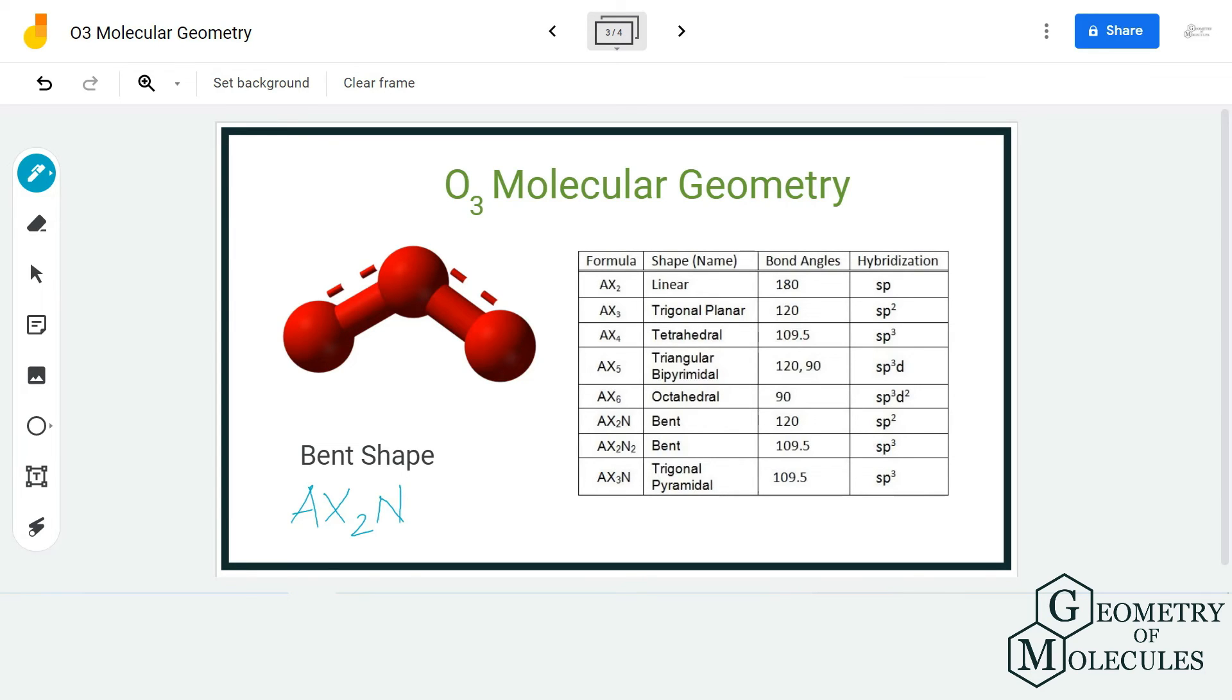If you refer to this table, you can see the molecules that are having AX2N as their AXN notation have bent molecular geometry, and the bond angles are given as 120 degrees over here. But for ozone, it is going to be a little less than this. So ozone is a bent molecule.